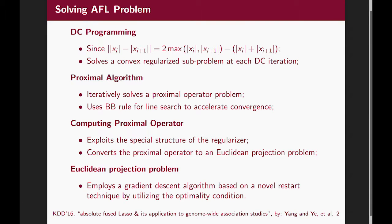Due to the non-convexity of AFL, it is challenging to develop efficient algorithms to solve the optimization problem. To this end, we employ DC programming to optimize the proposed non-convex problem. At each DC iteration, we adopt a proximal algorithm to solve a convex regularized sub-problem. One of the major contributions of this paper is to develop a highly efficient algorithm to compute the proximal operator. Specifically, by exploiting the spatial structure of the regularizer, we first convert the computation of such proximal operators to an equivalent gradient projection problem. We then develop a gradient descent algorithm based on a normal restart technique by utilizing the optimality condition to efficiently solve the projection problem.